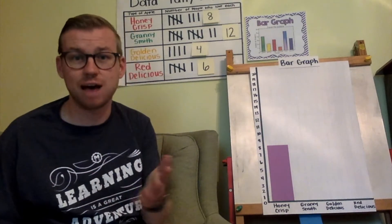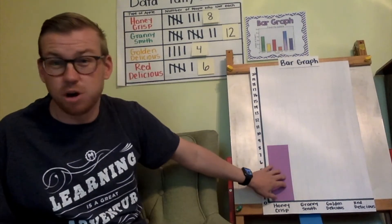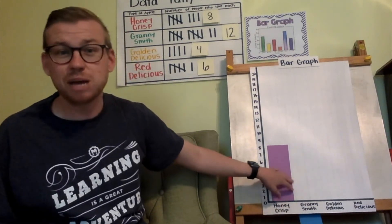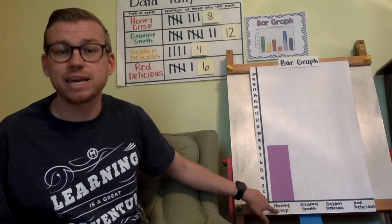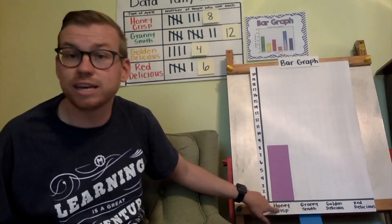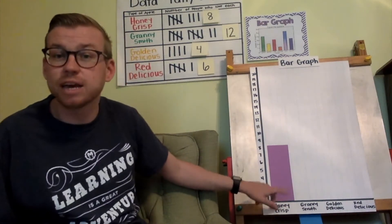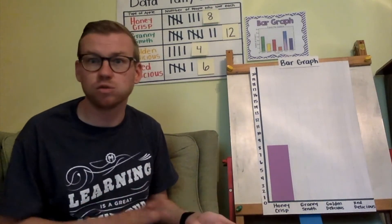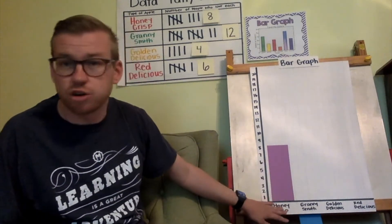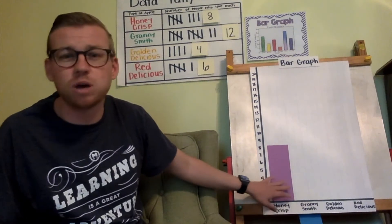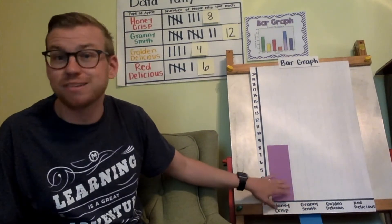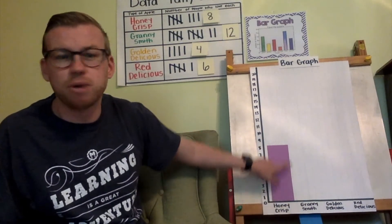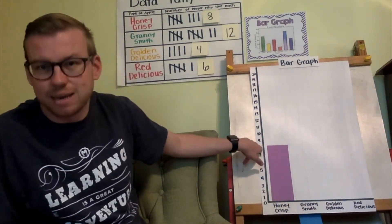The color of the bar does not matter for a bar graph like this. Sometimes there might be more than one bar under each topic — for example, in upper grades like fourth, fifth, or middle school, you might have two bars under Honeycrisp where blue might be boys and green might be girls. But for us, we're just putting one bar that lands right on the number eight.